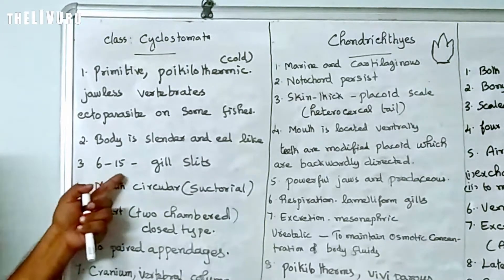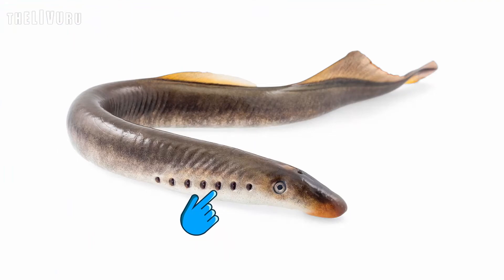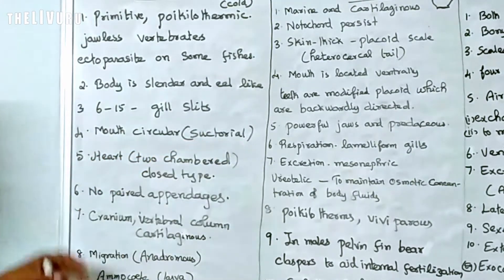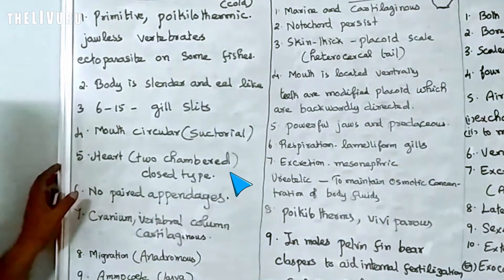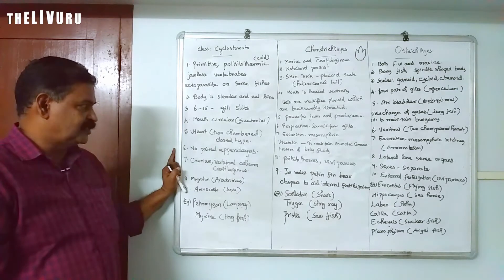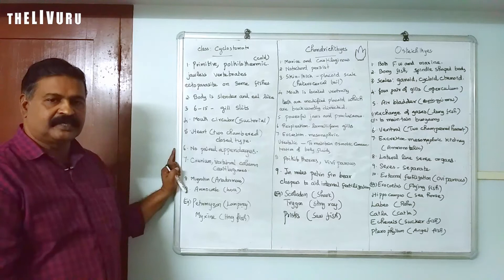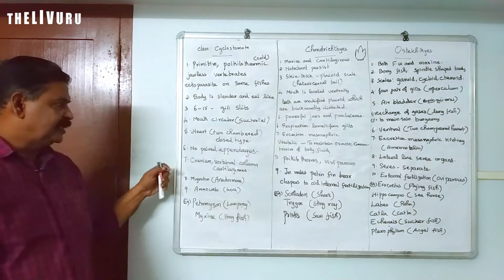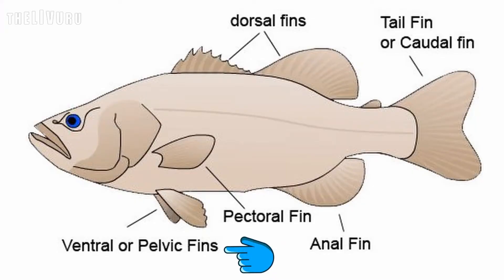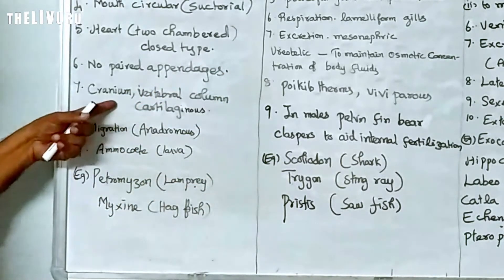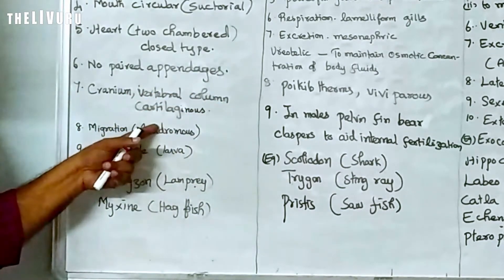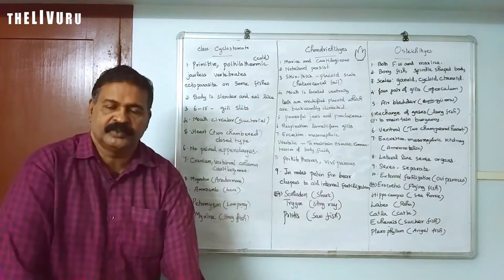In Cyclostomata, 6 to 15 pairs of gills are available. The mouth is circular. The heart is 2-chambered. Blood circulation is of the closed type — blood vessels are present. There are no paired appendages. The vertebral column is present, and the cranium is present.